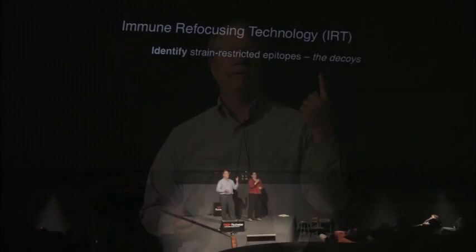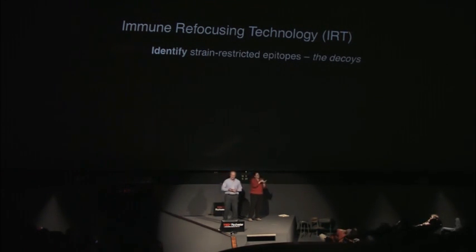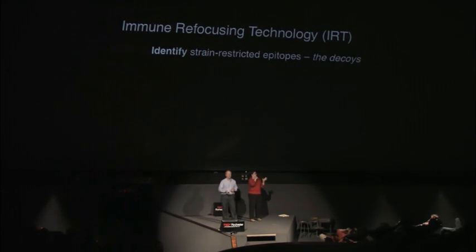My colleagues and I at Biological Mimetics in Frederick, Maryland have developed a technology we call the immune refocusing technology. It really has two parts. The first part is to identify the problem—find out where the decoys are. We've examined hundreds of thousands of viruses, structures, and antibodies, and we think we can now identify these decoys that are the bad players.